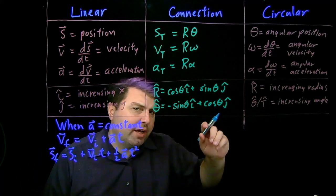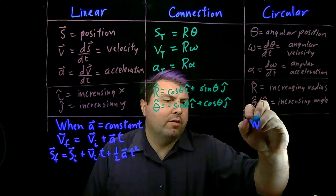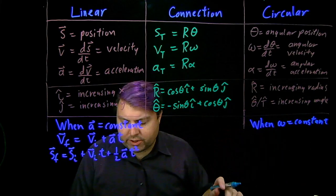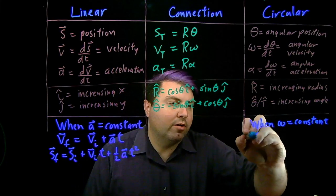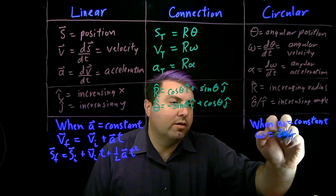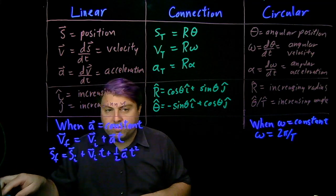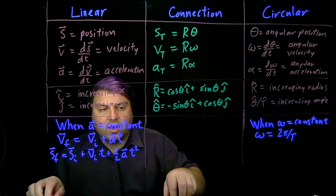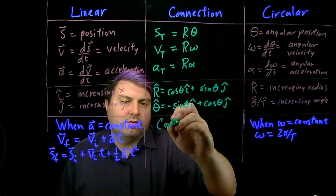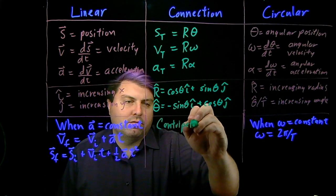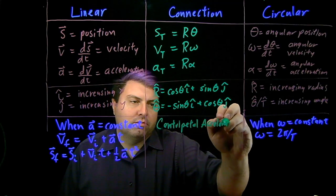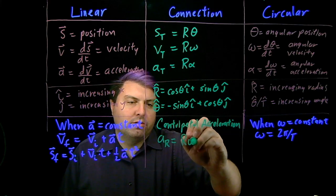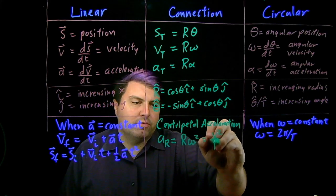And over in the circular side, we have when our omega is constant, we get just a nice and easy omega is equal to 2 pi over t. Our connection between these two is our centripetal acceleration, which is that a_r is equal to r omega squared, which is equal to v squared over r.